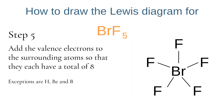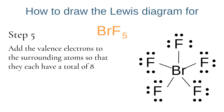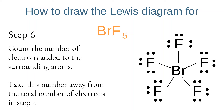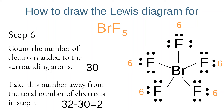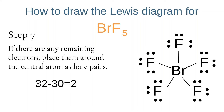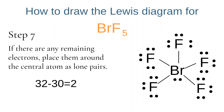We then add valence electrons to the surrounding fluorine atoms until they each have a total of 8 electrons. In step 6, we count the total number of valence electrons added to the surrounding atoms. We added 6 lone pair electrons to each of the 5 fluorine atoms, so 30 electrons in total. Taking this away from the 32 remaining electrons means we still have 2 electrons left to add to our Lewis diagram.